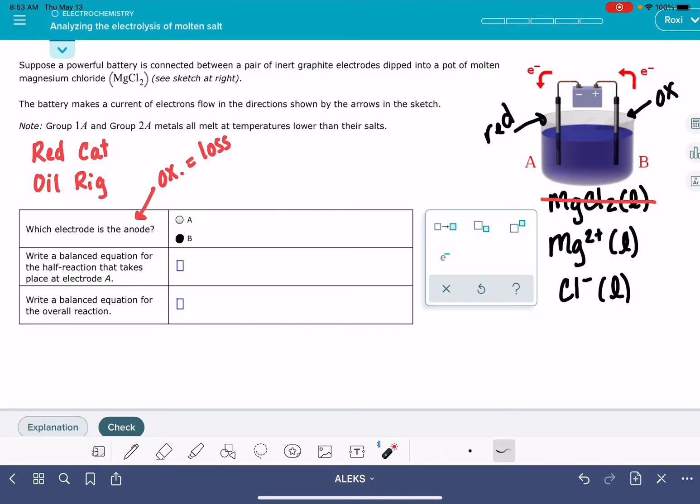The second question wants us to write a balanced equation for the reaction that's taking place at electrode A. So we've decided electrode A is where the reduction is occurring. Reduction is the gain of electrons. So what we're going to have to do next is work on these ions that have been given to us in this molten solution, and we've got to write some half-reactions for those ions.